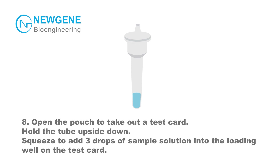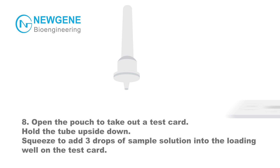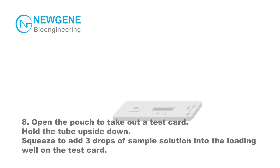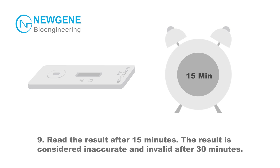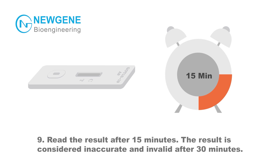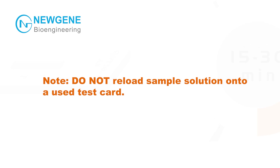Step 8: Open the pouch to take out a test card. Hold the tube upside down and squeeze to add three drops of sample solution into the loading well on the test card. Step 9: Read the results after 15 minutes. The result is considered inaccurate and invalid after 30 minutes.